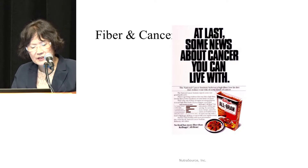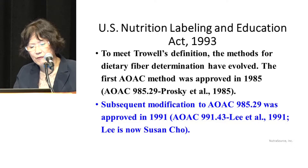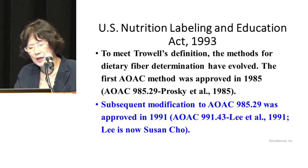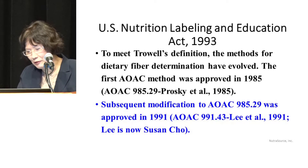To meet Dr. Trowell's definition, methods for dietary fiber determination have evolved. The first AOAC method was approved in 1985: AOAC 985.29. AOAC method numbers typically include the year of publication. It is often called the Prosky method. A subsequent modification, AOAC 985.29, was approved in 1991 and is often called the Lee method — though Lee is now Susan Cho.